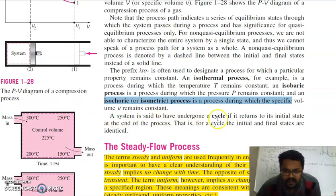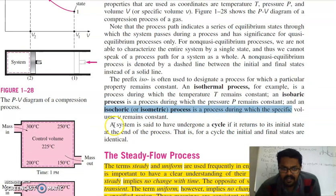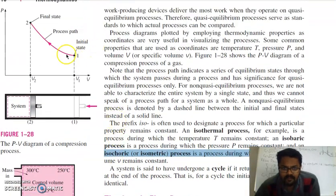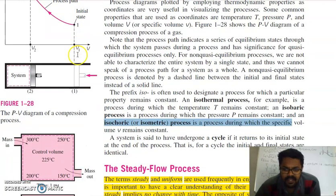A system is said to have undergone a cycle if it returns to its initial state. What does cycle mean? It means combination of processes. This is one process, then second process, then third process and fourth process. After all the processes, the system returns to its original state. It is said to be a cycle.